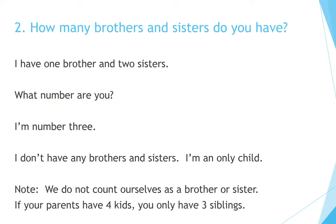How many brothers and sisters do you have? I have one brother and two sisters. What number are you? I am number three. I don't have any brothers and sisters — I am an only child. Note: we do not count ourselves as a brother or sister. If your parents have four kids, you have only three siblings.